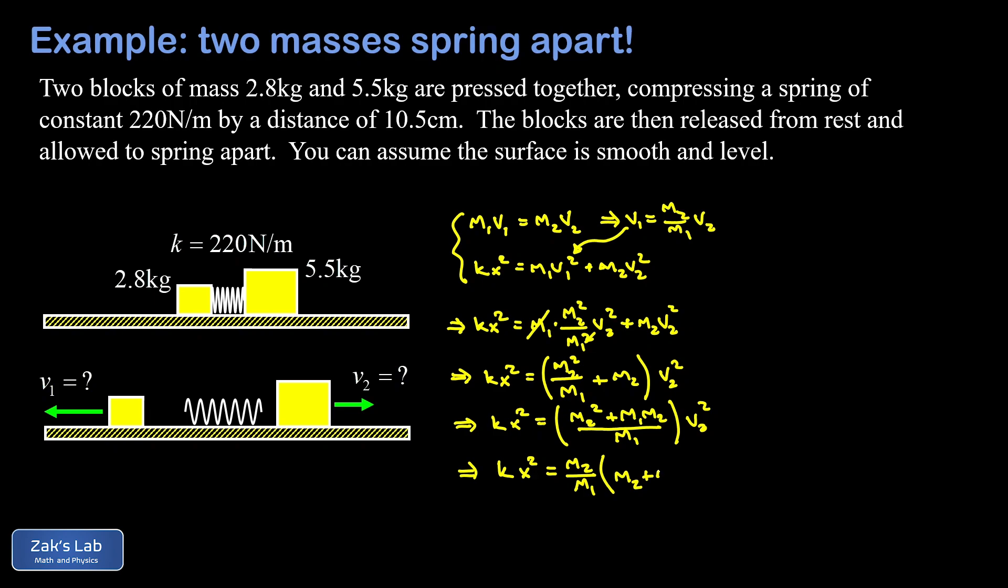The goal is to solve for v2, so I multiply both sides by the reciprocal of this coefficient. That gives me on the left m1·k·x² divided by m2 times the sum of the two masses, m1 + m2, and that's all equal to v2². So v2 is the square root of m1·k·x² over m2 times (m1 + m2).